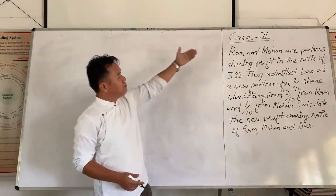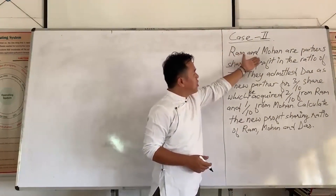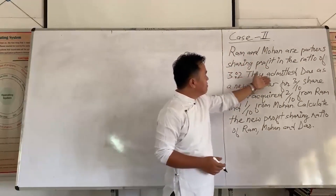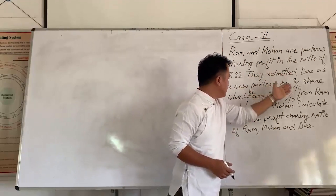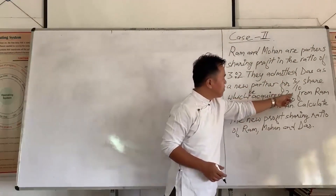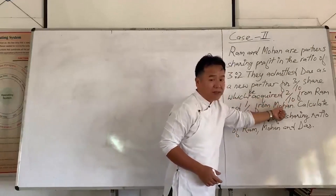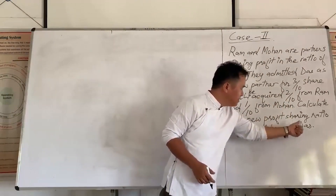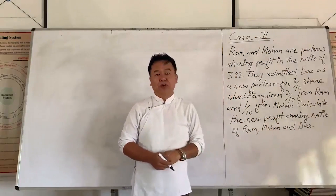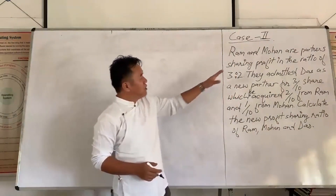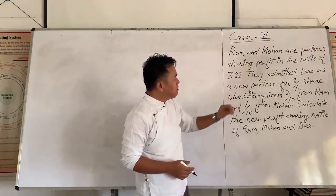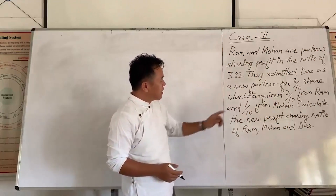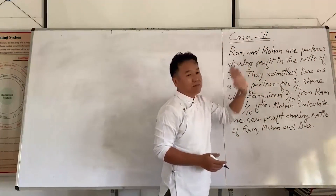Now let's move on to case number 2. Ram and Mohan are partners sharing profit in the ratio of 3 to 2. They admit Das as a new partner with 3 by 10 share, which he acquires — 2 by 10 from Ram and 1 by 10 from Mohan. Calculate the new profit sharing ratio of Ram, Mohan and Das.